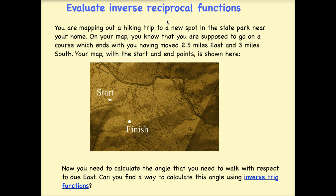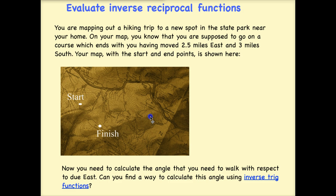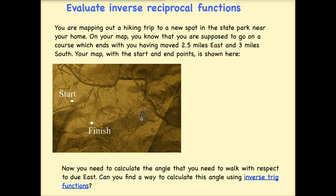Let's start with a basic problem that you might remember from prior math classes. In this example, you are mapping out a hiking trip to a new spot in the state park near your home. On your map, you know that you are supposed to go on a course which ends with you having moved 2.5 miles east and 3 miles south. Your map with the start and end points is shown here.